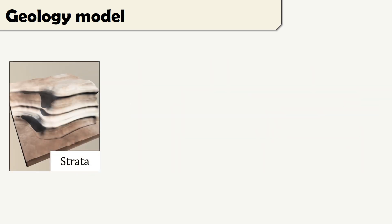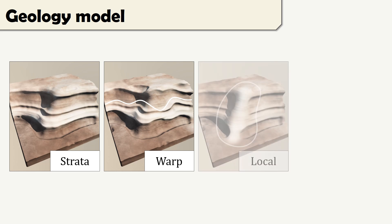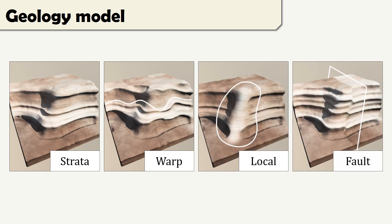Base primitives for generating such a model include noise functions and strata functions. They are combined and deformed in order to produce warps, local modification effects, or faults.